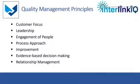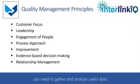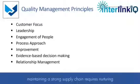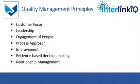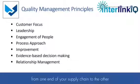Continuous improvement — successful businesses are consistently innovating and improving. Evidence-based decision making: you need to gather and analyze useful data, then use data-driven insights to make better informed decisions. And lastly, relationship management. Maintaining a strong supply chain requires nurturing relationships with your suppliers. Over time, this will generate a strong spirit of collaboration from one end of your supply chain to the other.